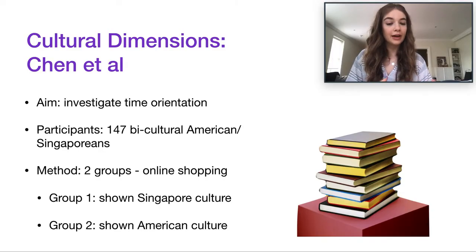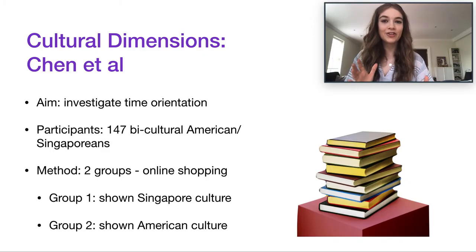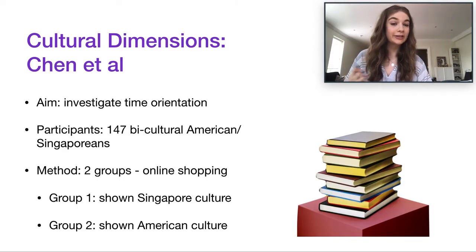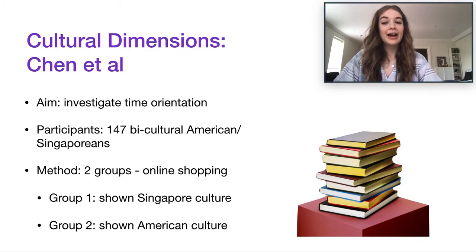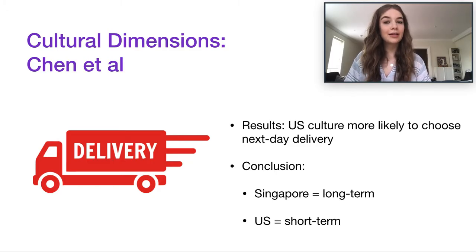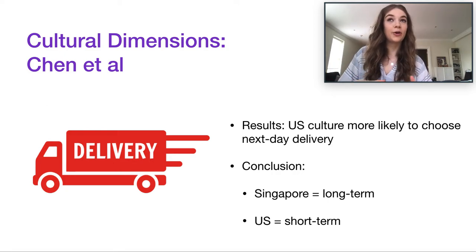They then tested the groups' impatience by having each participant perform an online shopping task — ordering a book. They wanted to see how much participants valued getting the book sooner rather than later, and how money played into that. The book could be delivered in four days for a standard fee, or the next day for an additional charge. What they found was that participants primed with American culture were more likely to choose next-day delivery — paying a fee for short-term, instant gratification — suggesting they were more impatient.